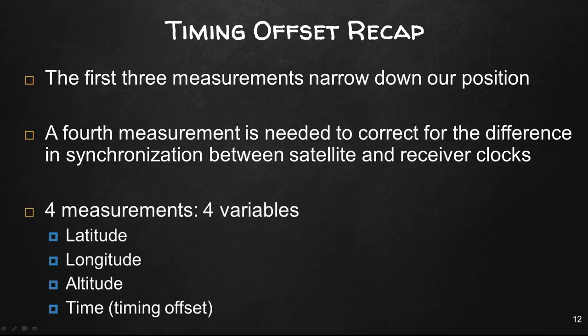So four measurements, we have four variables. We can now calculate the latitude, longitude, altitude, and timing using timing offset. That is how and why you need at least four satellites to get a fixed position of where that receiver is. Anything less than four will not be accurate and will not work.